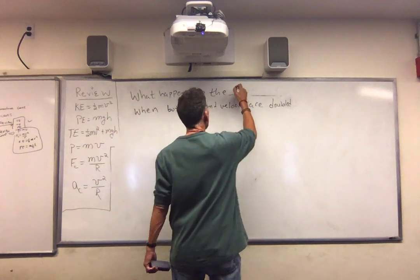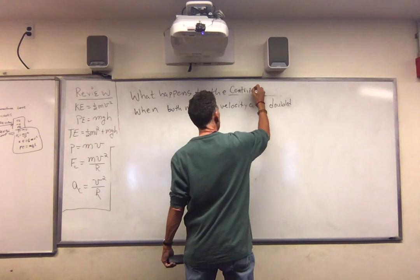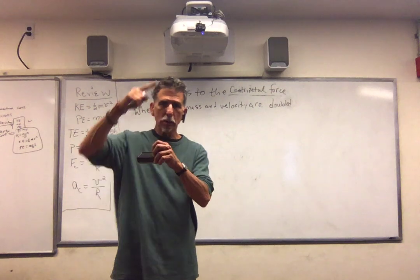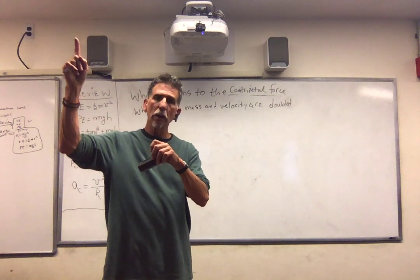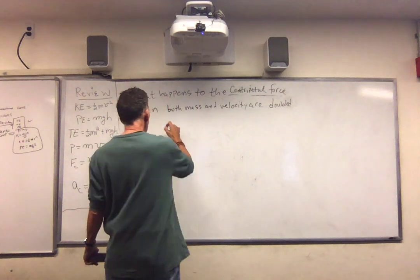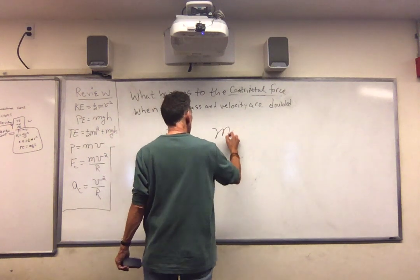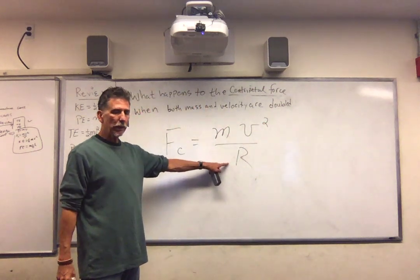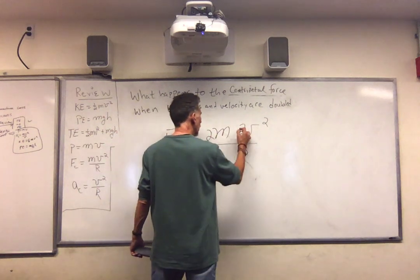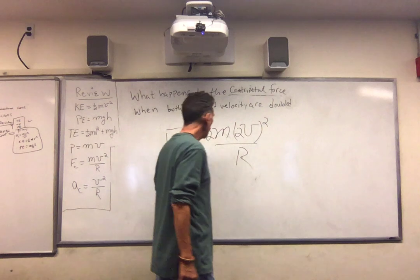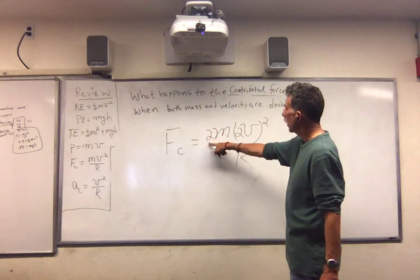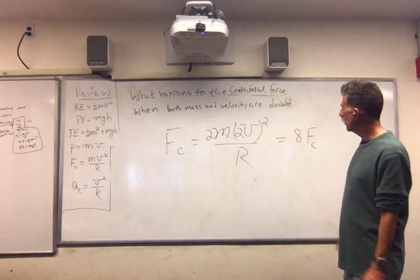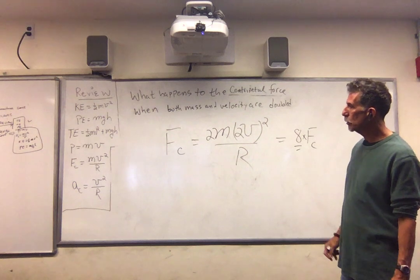Next, let's look at the centripetal force. Centripetal force. Remember what the word centripetal means. Center seeking. The object wants to fly off tangent and it keeps getting pulled towards the center. F sub c is mv squared over r. We're not doing anything to the radius. But we are doubling the mass. We're doubling the speed. And so what we end up with is two squared is four times two. So it becomes eight Fc. So it's increased eight times.